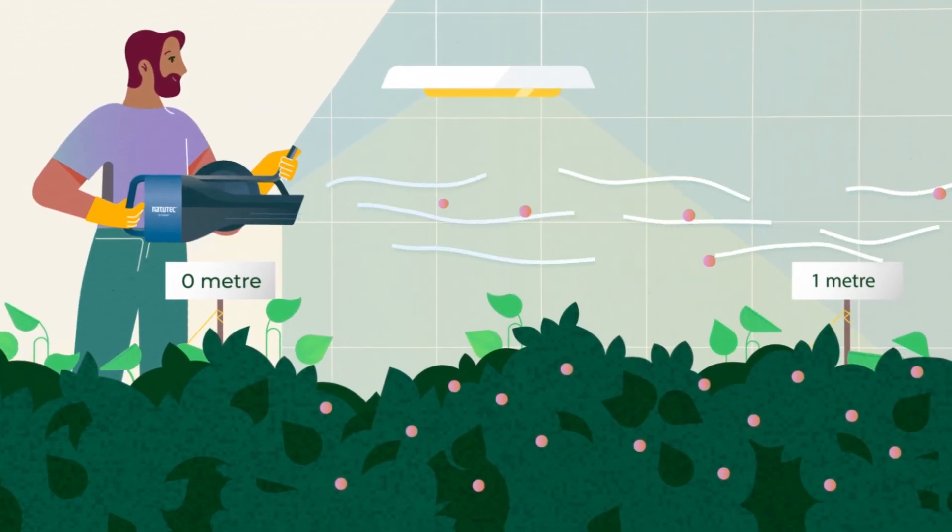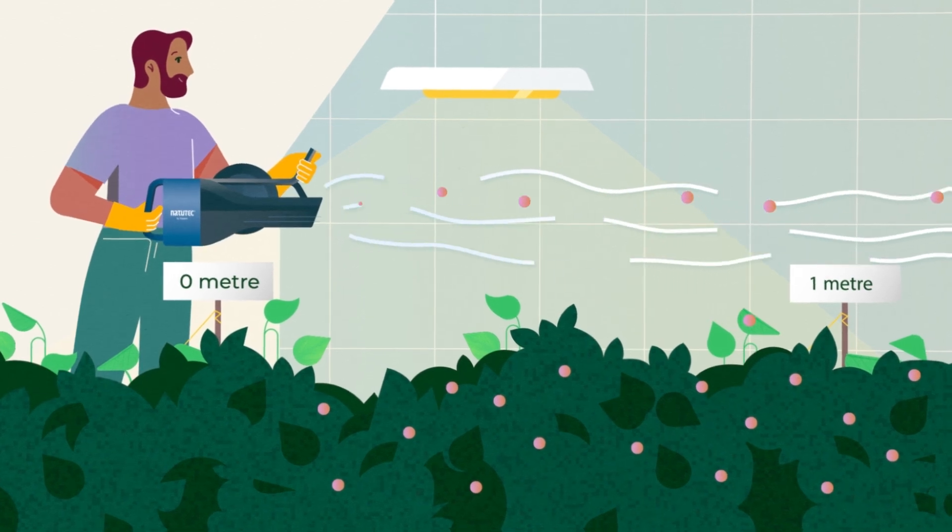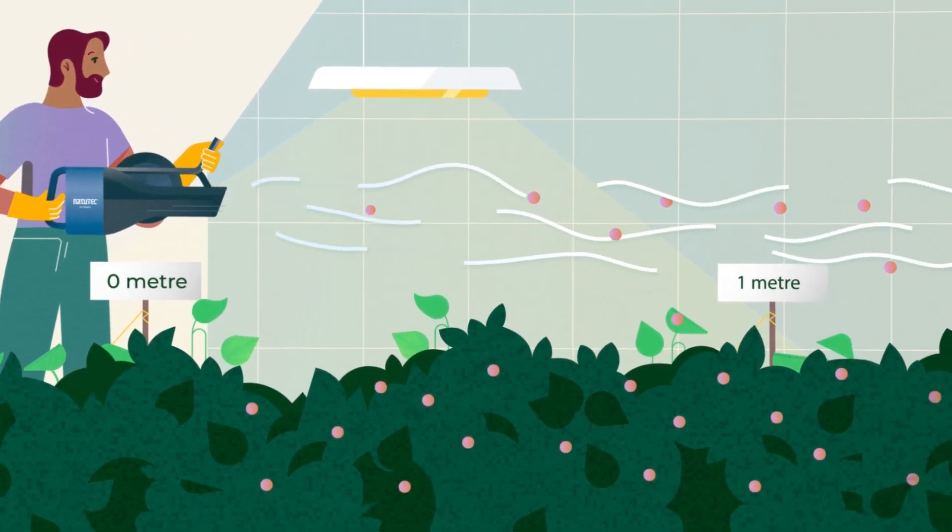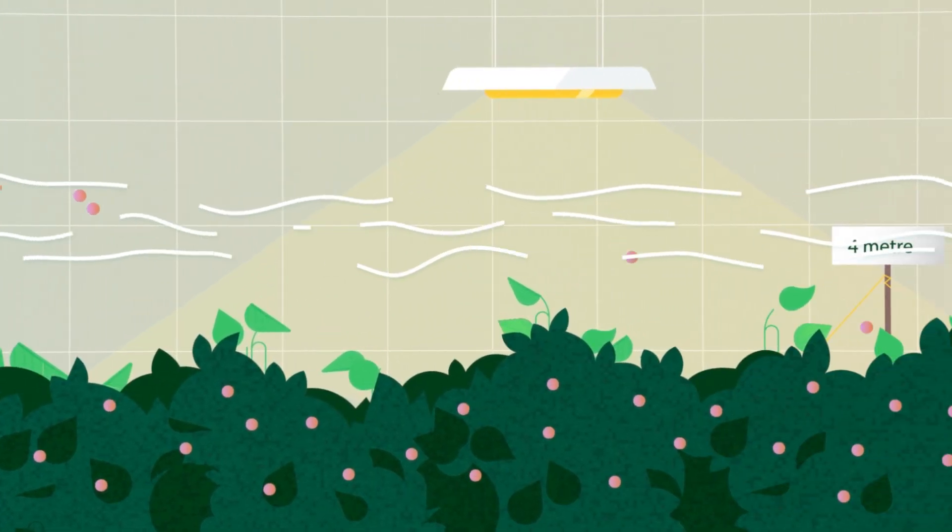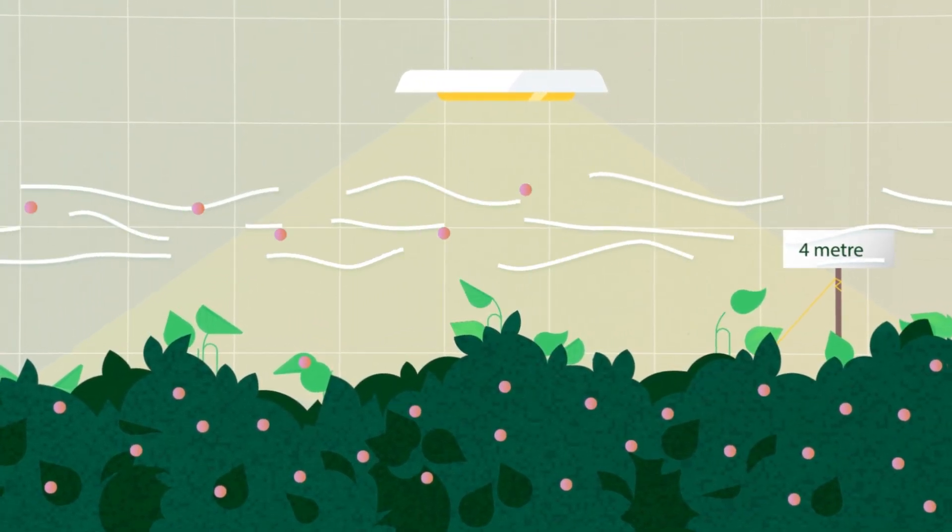It also maintains a consistent distribution over the crops to cover a close distance of between 0 and 1 meter and at the same time handles a 4 meter radius.